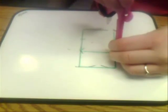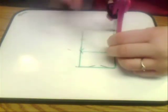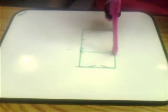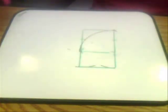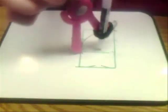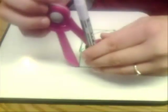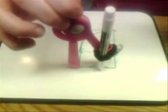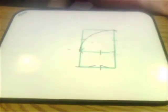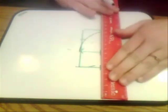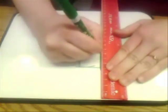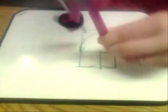Now it's time to do the spiral. The spiral is an arc whose radius is the length of one of the sides of the square. The smaller rectangle is also a golden rectangle, and we can construct a spiral within this one too.